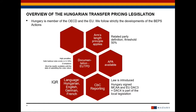Also the appointment and dismissal of the majority of the board of directors and supervisor board shows that there must be a related party classification. Documentation must be prepared. In Hungary at the moment, not the BEPS related master file and local file applies. In Hungary there is a choice what kind of documentation is prepared. One is a stand-alone transfer pricing documentation which includes all the elements that must be put in a general master file and local file.